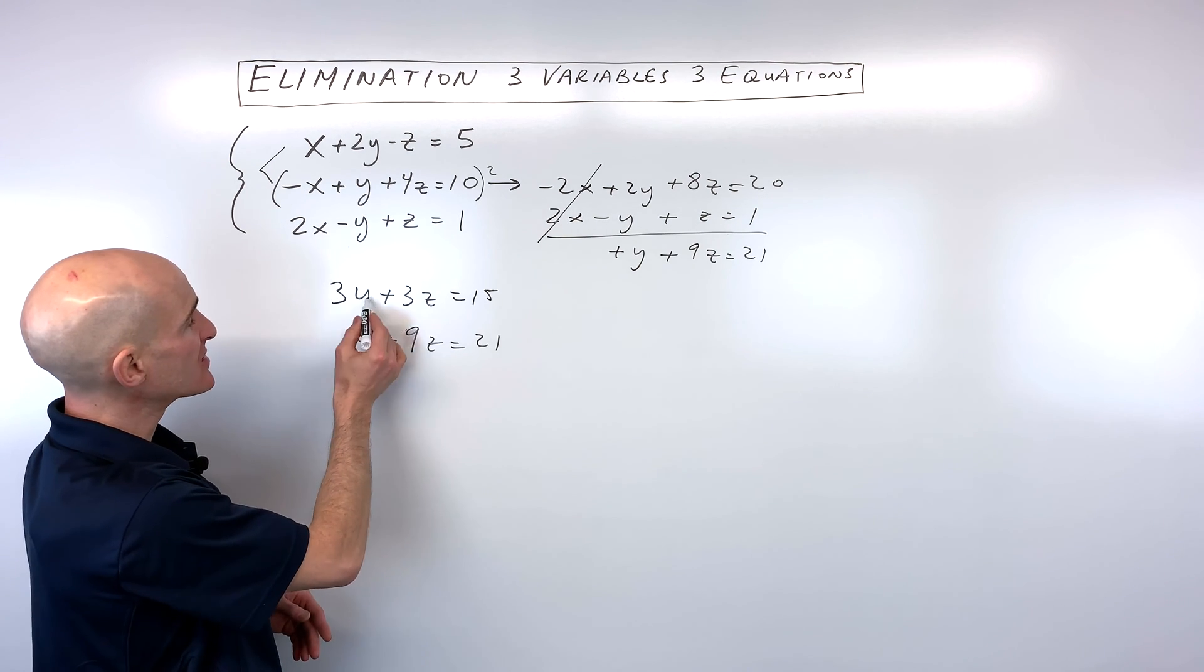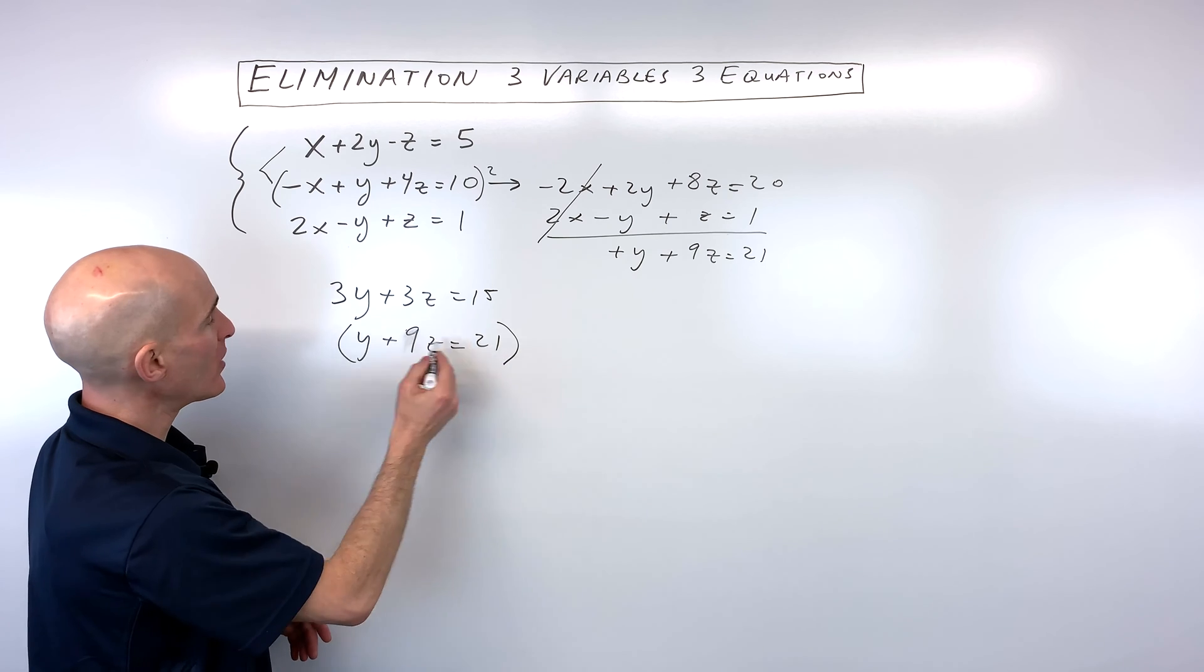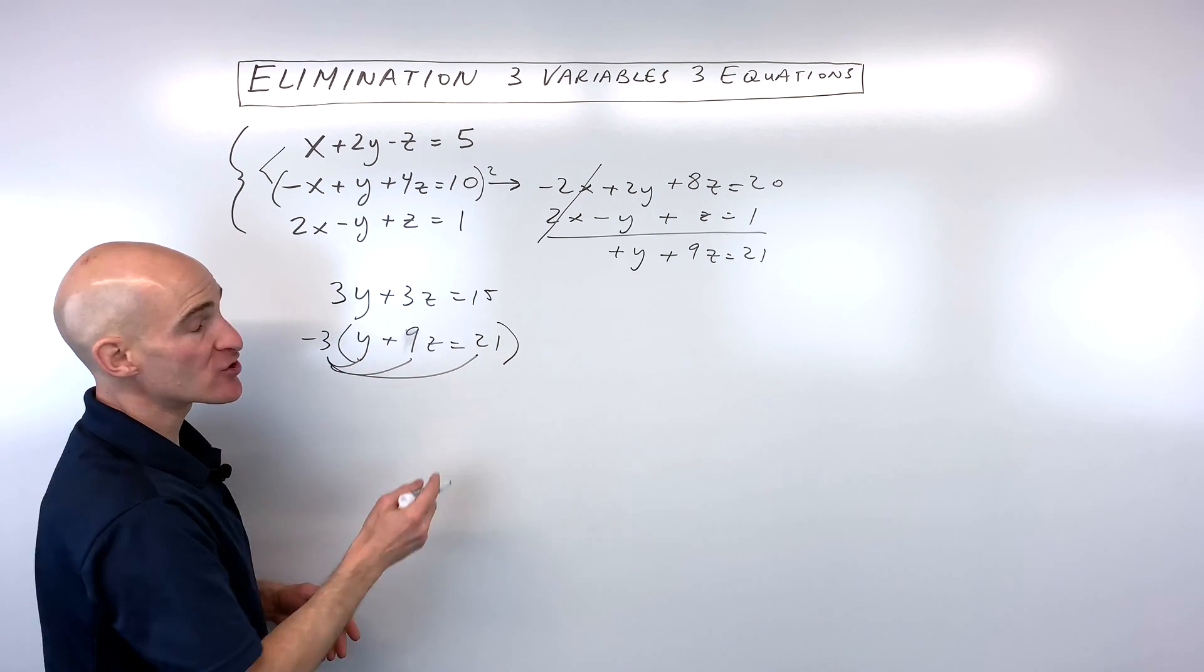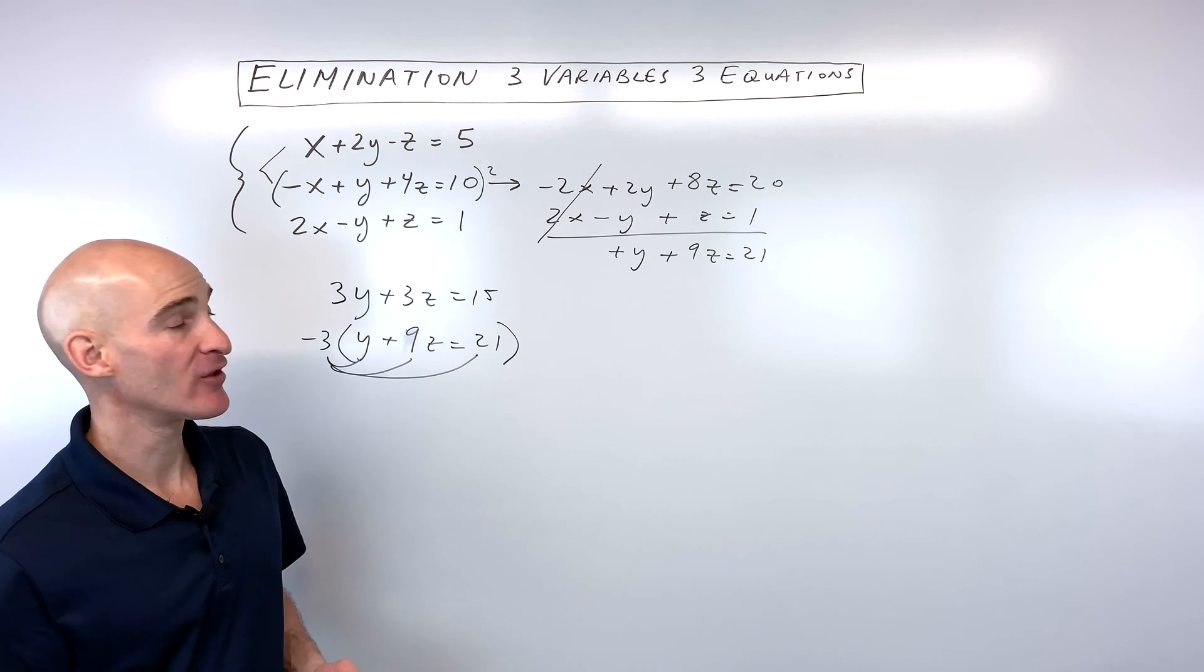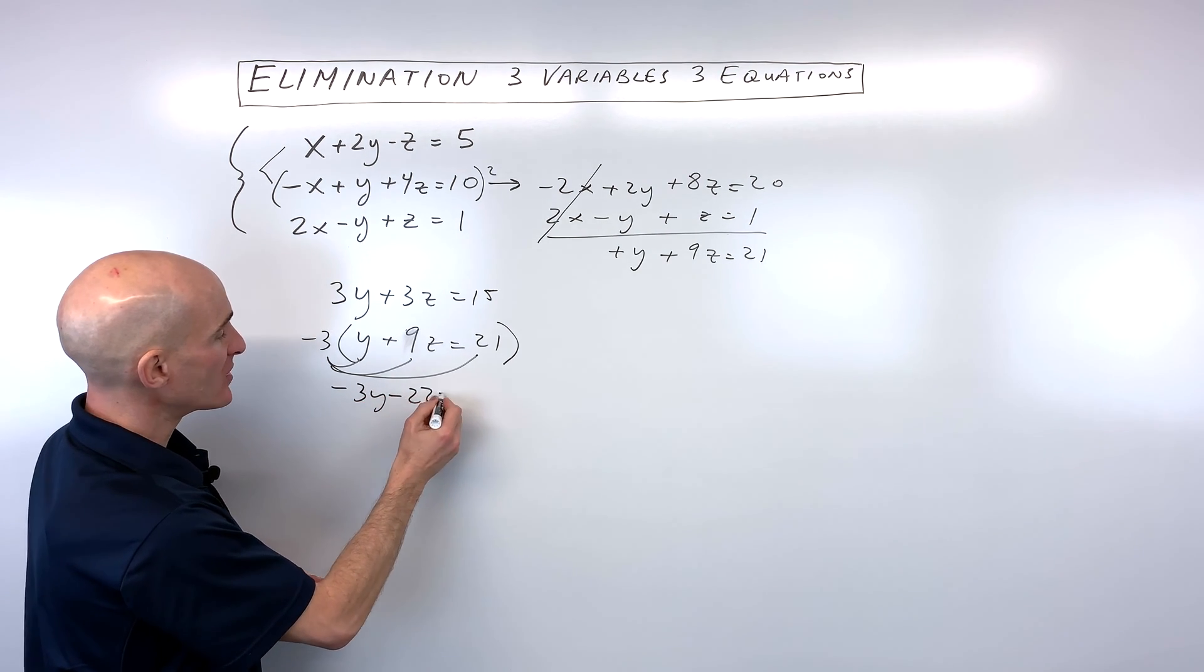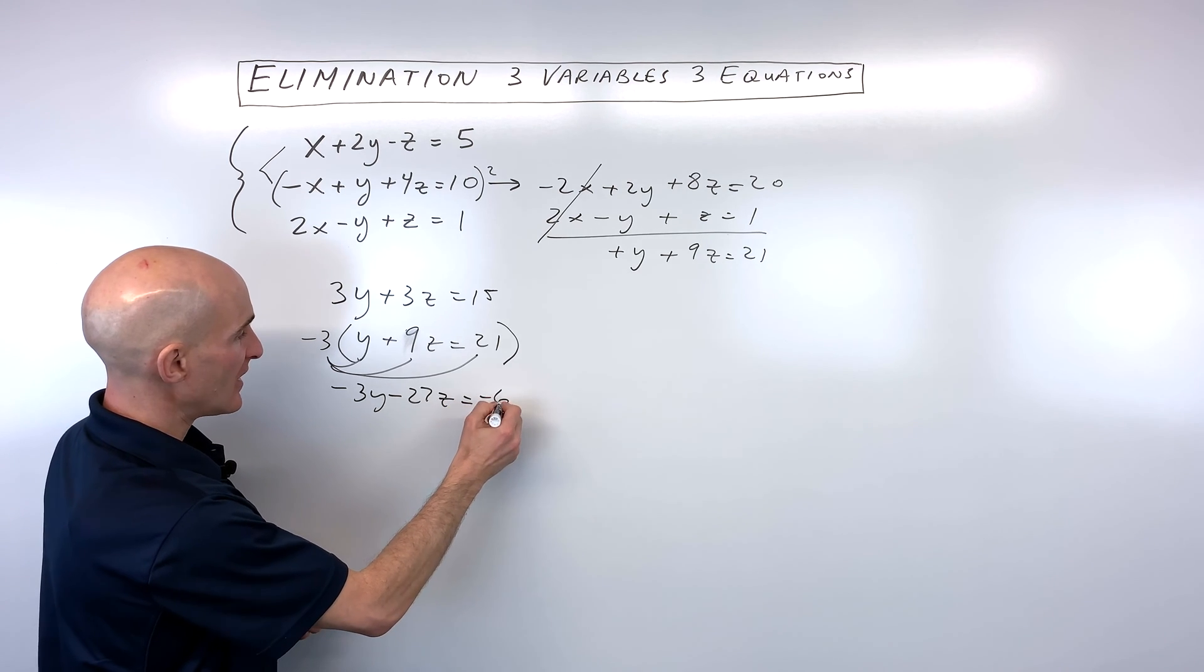And what I'm going to do is, because this is 3y, I'm going to multiply this whole equation times negative 3. So if we just distribute that negative 3, make sure you do it to the left, middle, and the right, the entire equation. We get negative 3y minus 27z is equal to negative 63.